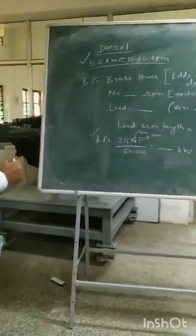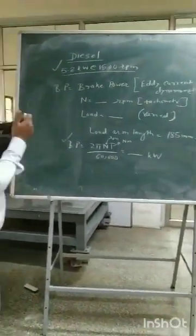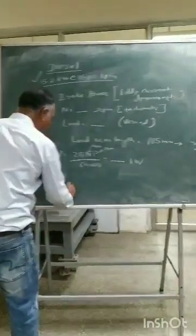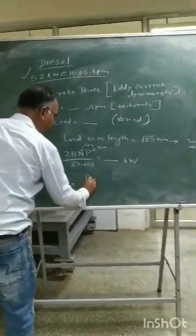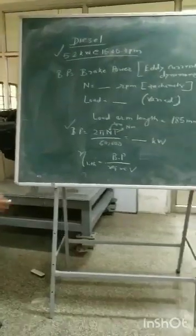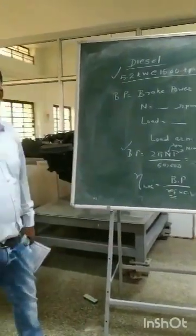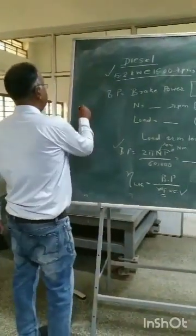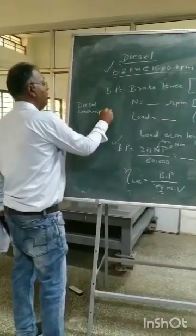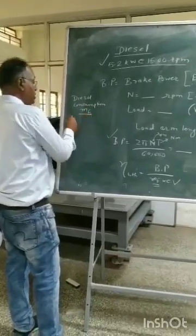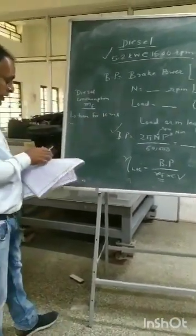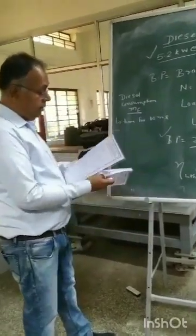Another important parameter we need to understand is the brake thermal efficiency. Brake thermal efficiency is brake power divided by the input to the engine, which is MF into C, where MF is diesel consumption. We record the diesel consumption by taking the time for 10 ml of fuel. Using the time for 10 ml you can determine the fuel consumption.